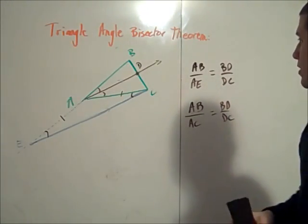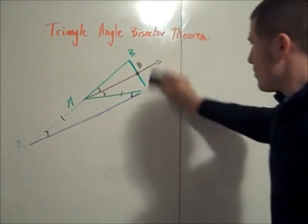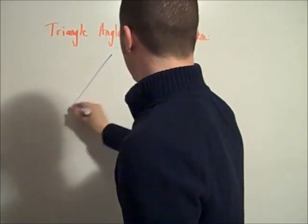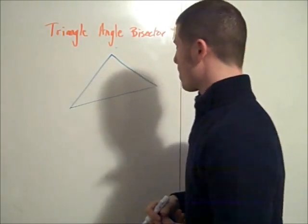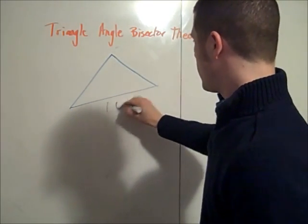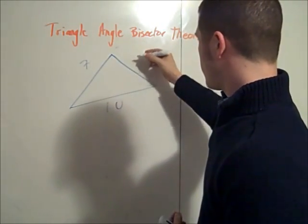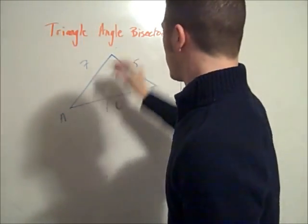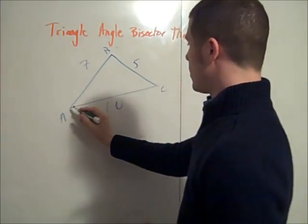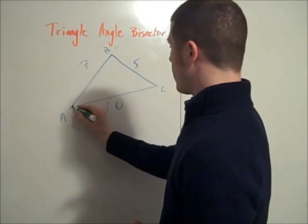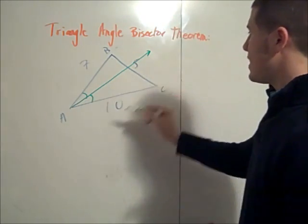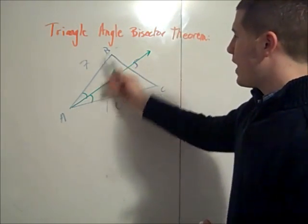So maybe one more example just to drive this point home. If we have some triangle, maybe we can just make up some side lengths, 10, 7, and 5. And maybe this is triangle ABC. If we bisect angle A, then we know that BC is cut proportionally to AB and AC.